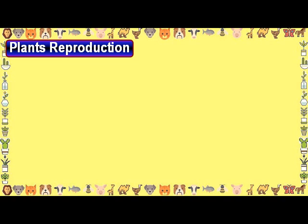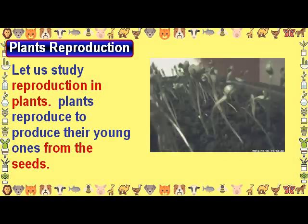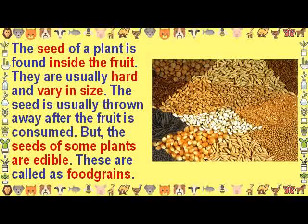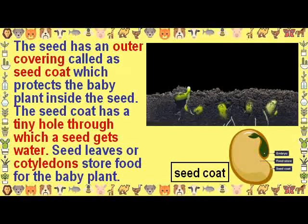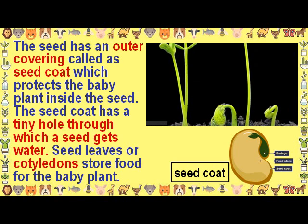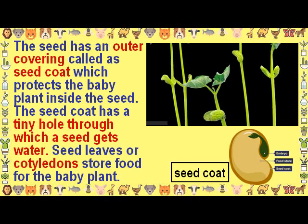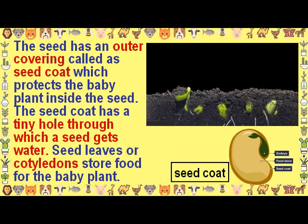Plants Reproduction. Plants reproduce to produce their young ones from seeds. The seeds of a plant are found inside the fruit. They are usually hard and vary in size. The seed is usually thrown away after the fruit is consumed, but the seeds of some plants are edible — these are called food grains. The seed has an outer covering called the seed coat, which protects the baby plant inside. The seed coat has a tiny hole through which a seed gets water. Seed leaves, or cotyledons, store food for the baby plant.